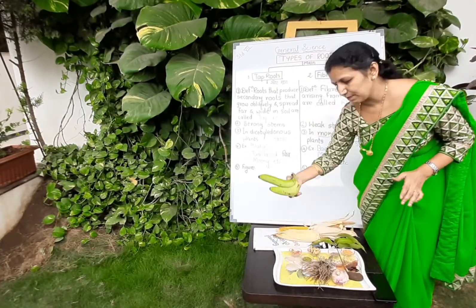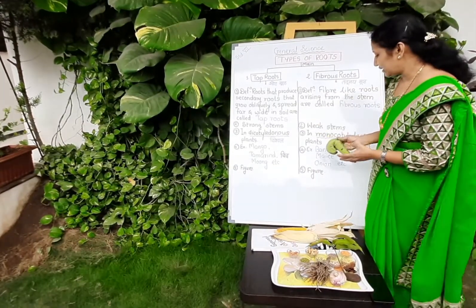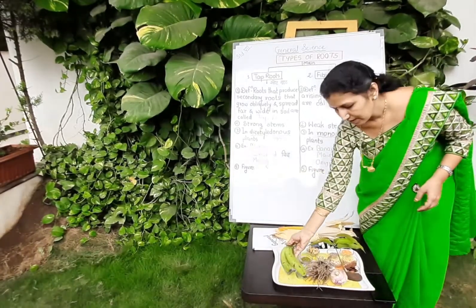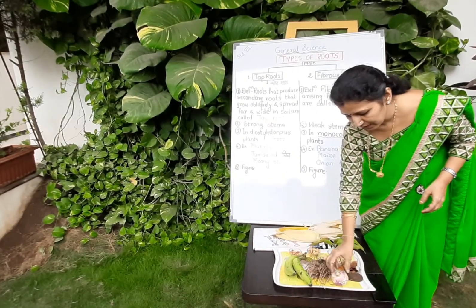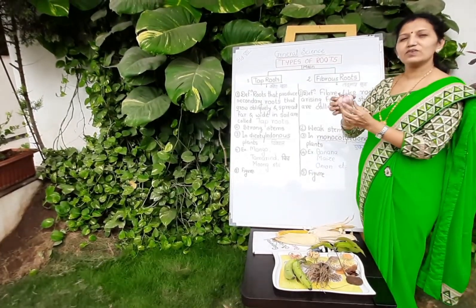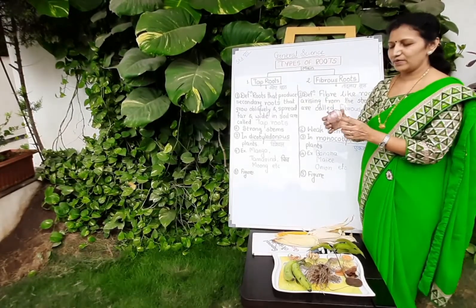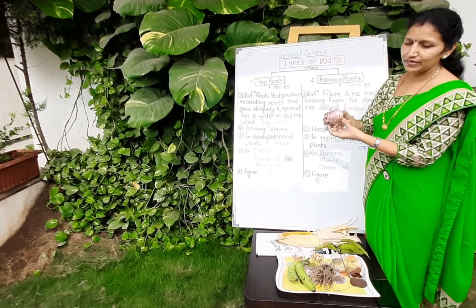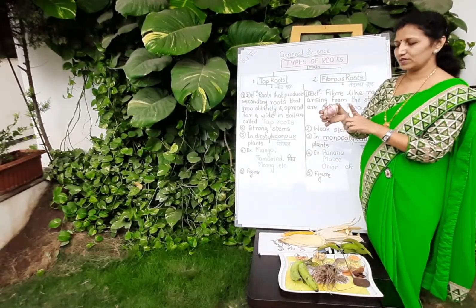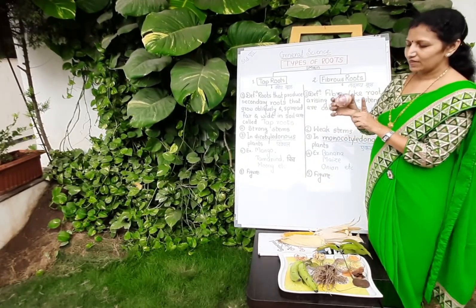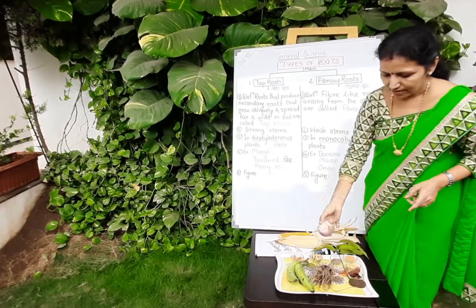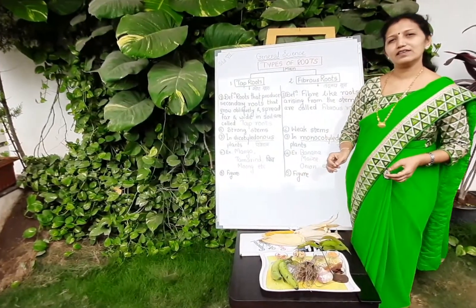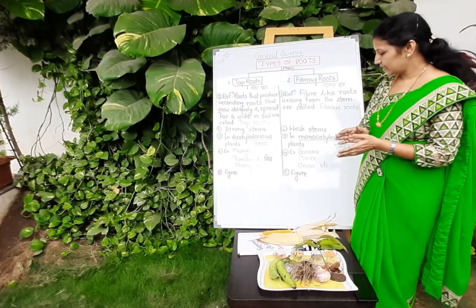This is banana, and the banana plant is an example of fibrous root. And this is onion — onion is having fibrous roots. You can do one experiment that is given in the textbook also. And garlic is also having fibrous roots.